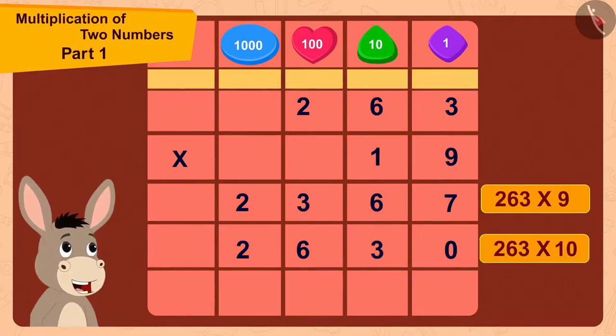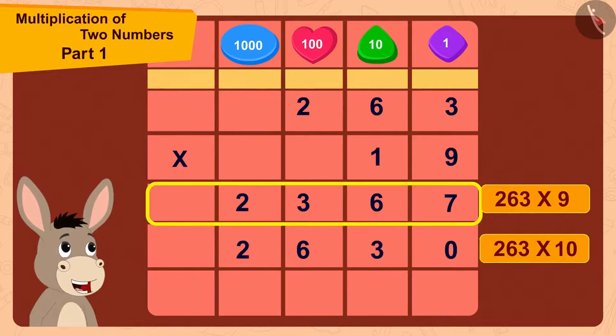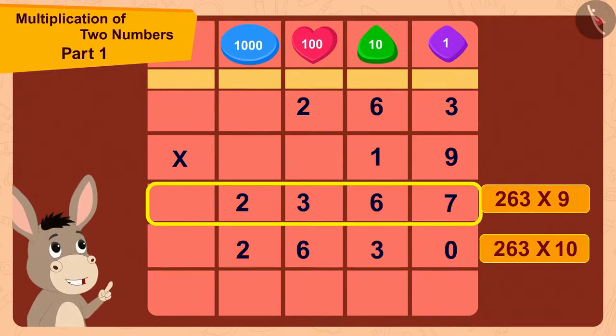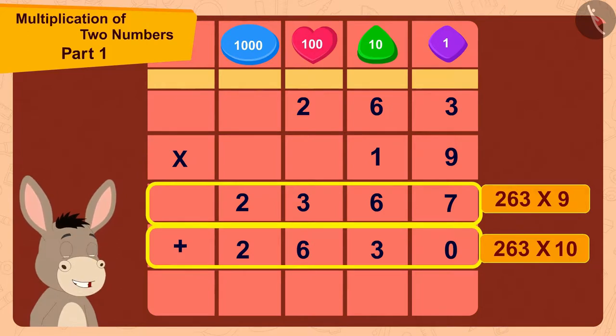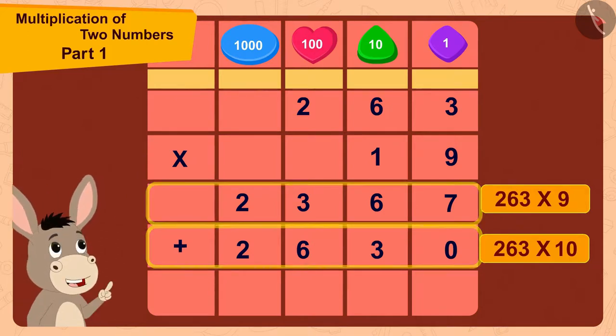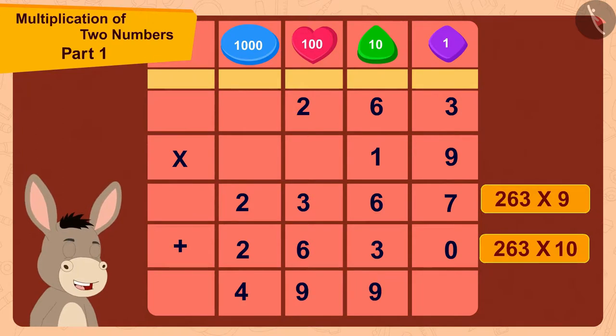And now, finally in this way, 2367 plus 2630 is 4997.